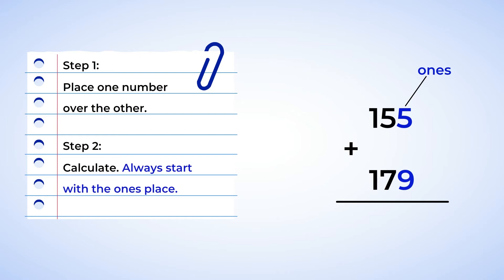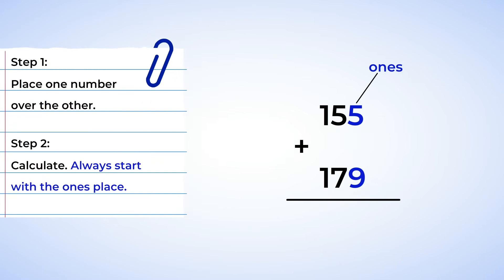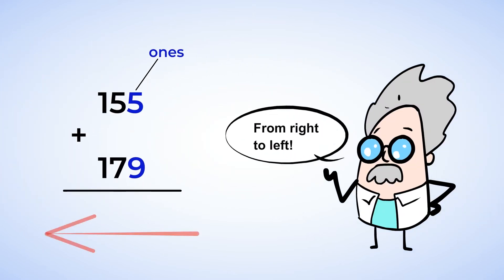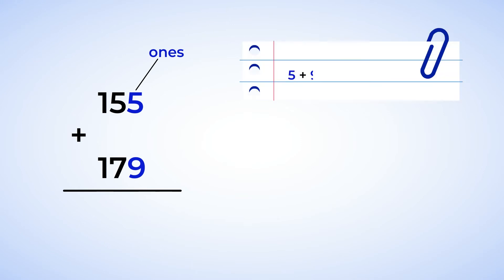You always start with the ones place. This is the first to be added. So to help you remember, go from the right to the left. In the ones place, you have 5 plus 9, which is 14. But 14 is a two-digit number and there is only one place for the ones in your answer.